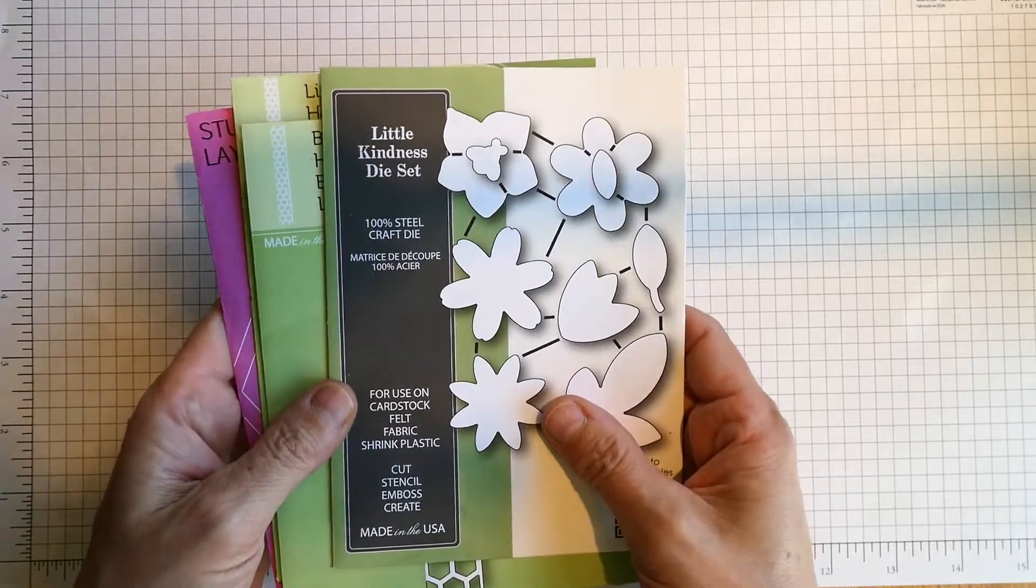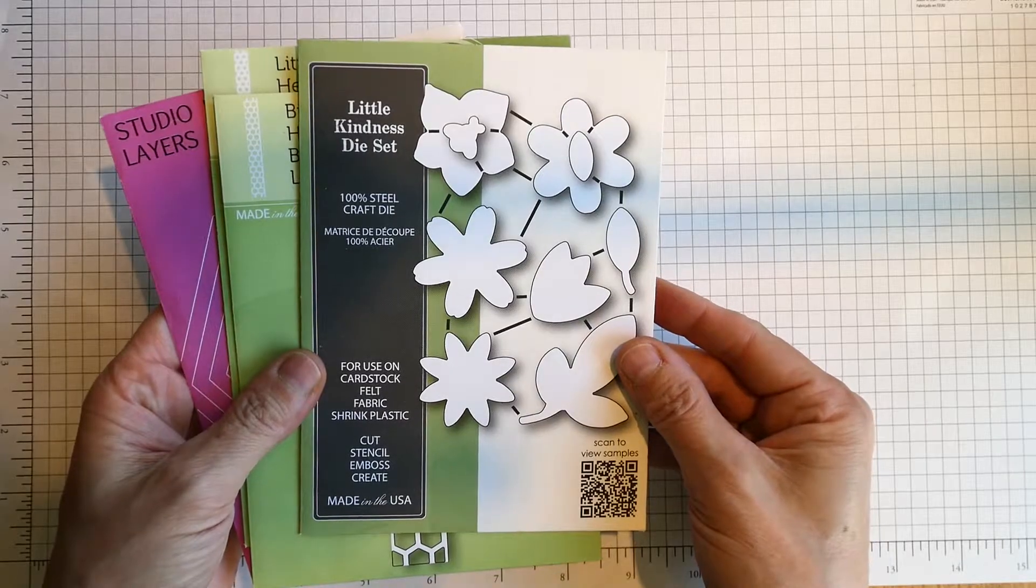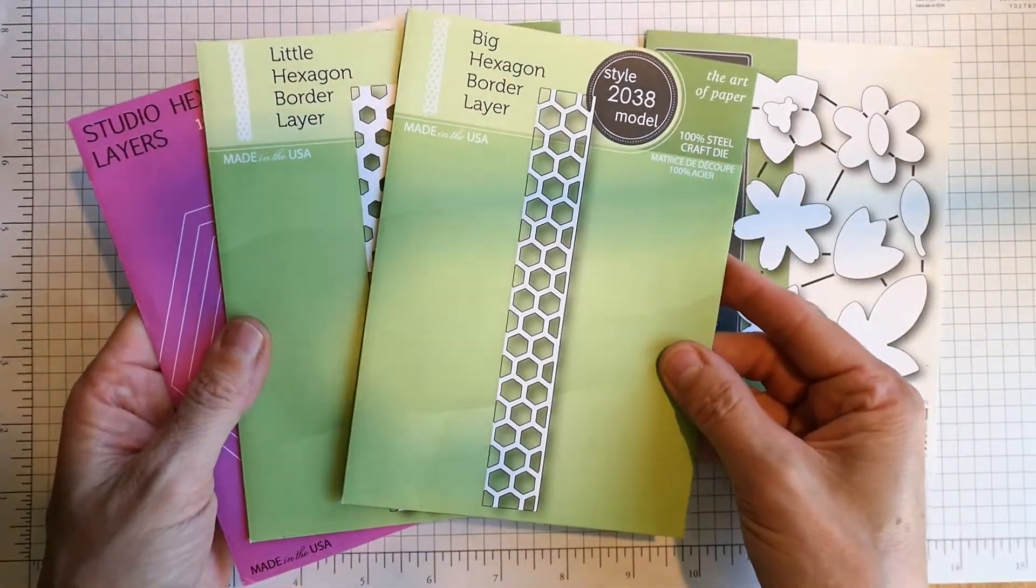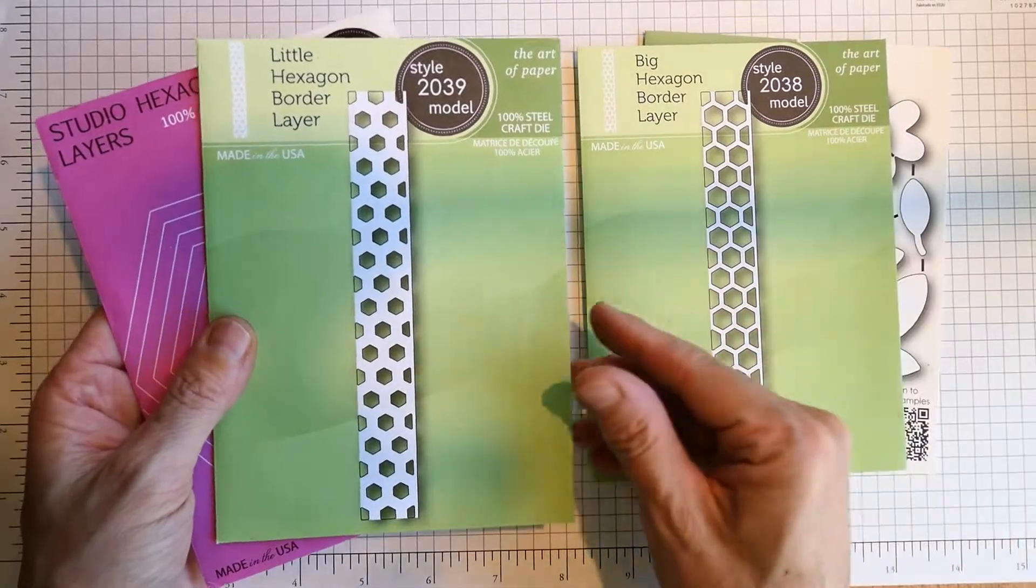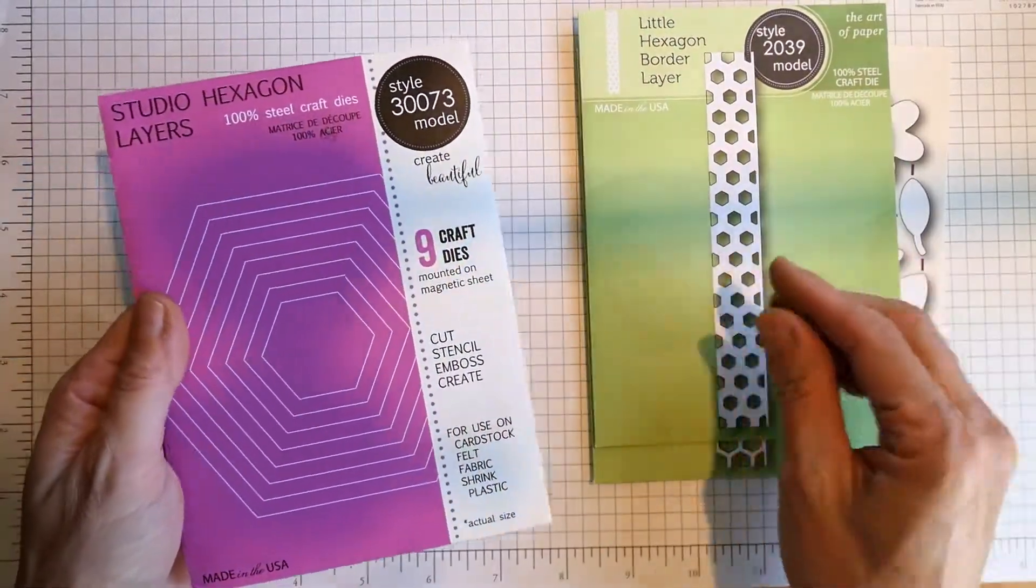The stamps and dies used for today's card were the Little Kindness Stamp and Die Set by Poppy Stamps, the Big and Little Hexagon Border Layer, and the Studio Hexagon Layers by Memory Box.